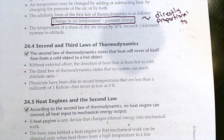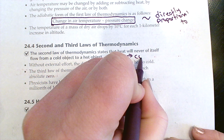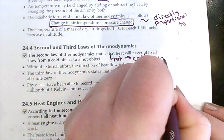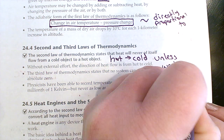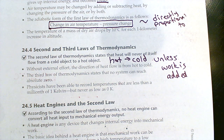The second law of thermodynamics says heat will never of itself flow from a cold object to a hot object. I would phrase it as: heat generally flows from hot to cold, unless work is done. We can force heat from cold to hot — that's what your refrigerator does — but it doesn't happen naturally. We have to add electricity, moving parts, refrigerant chemicals, and all those kinds of things.